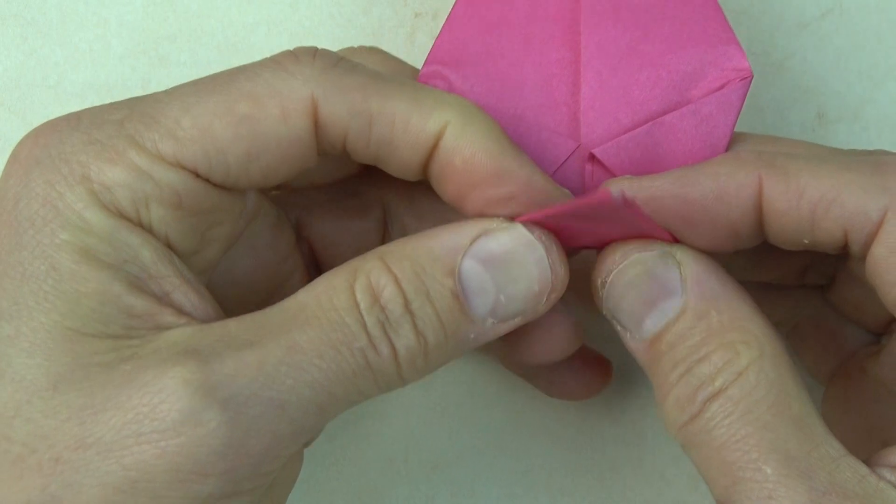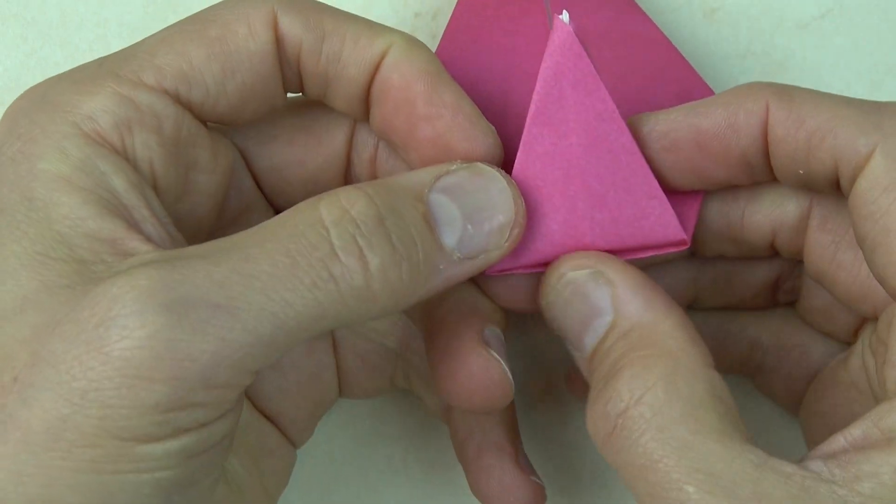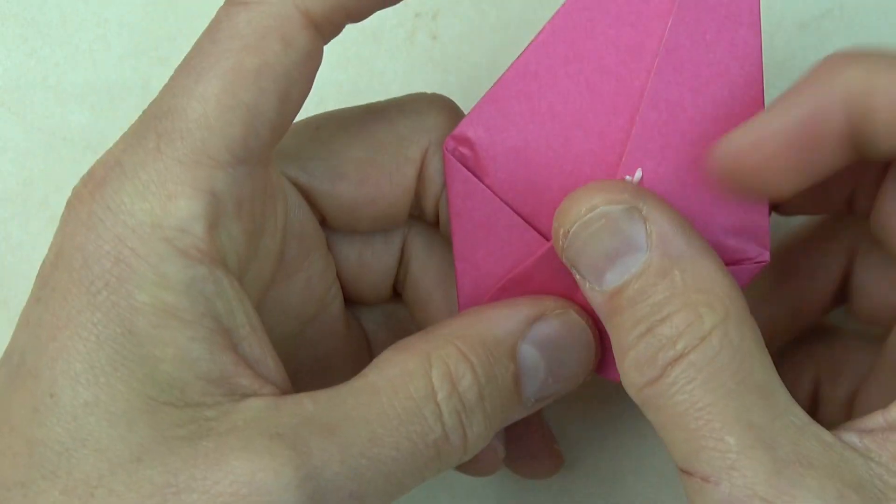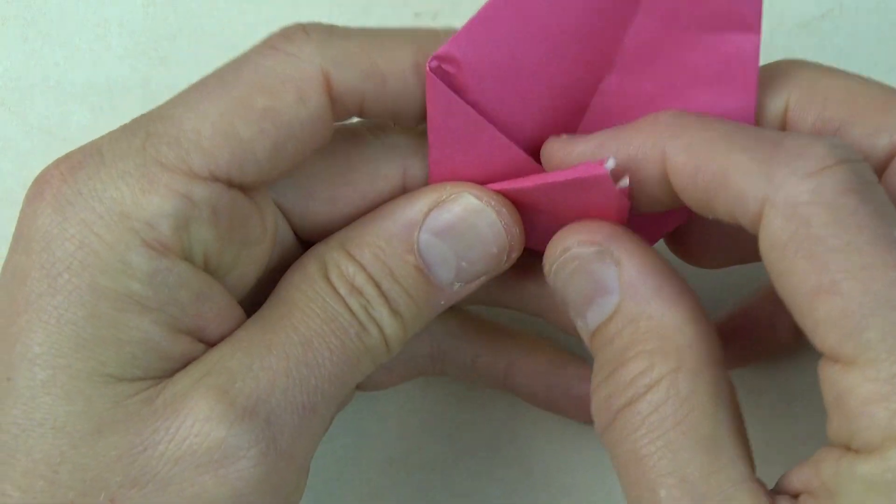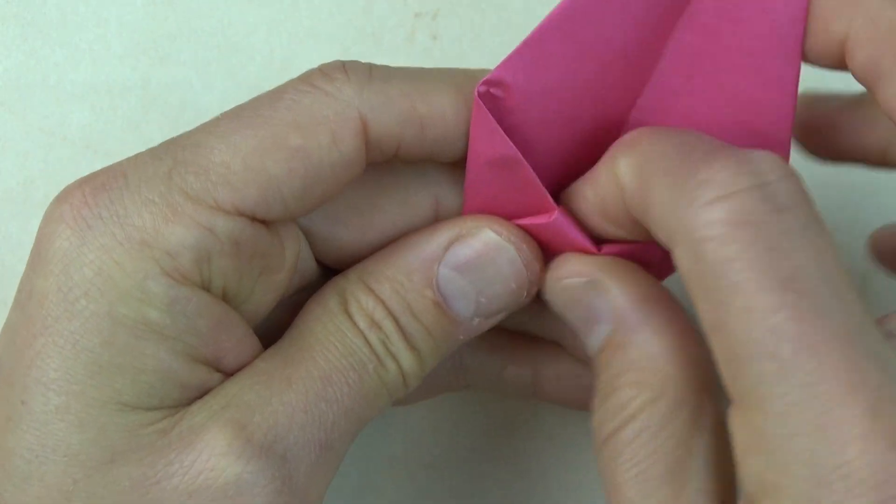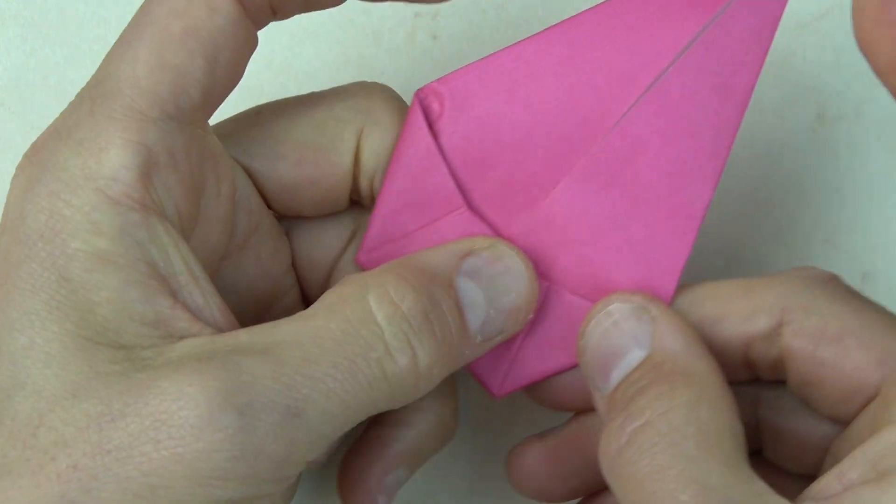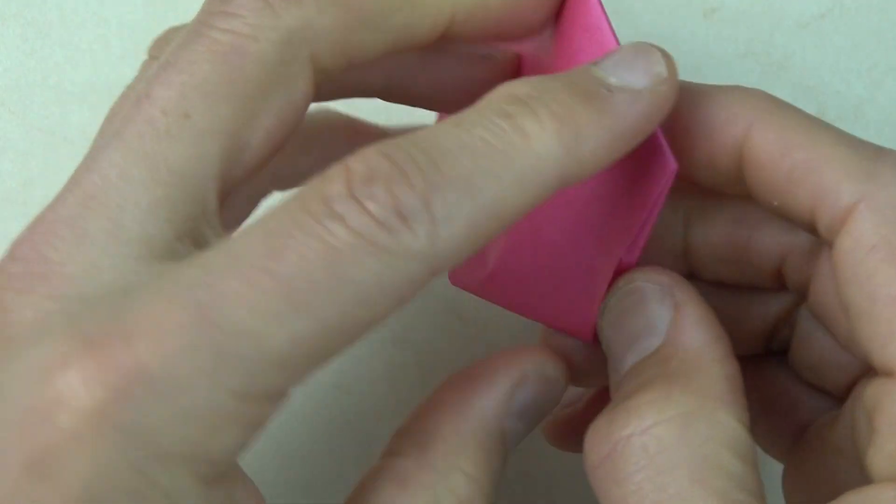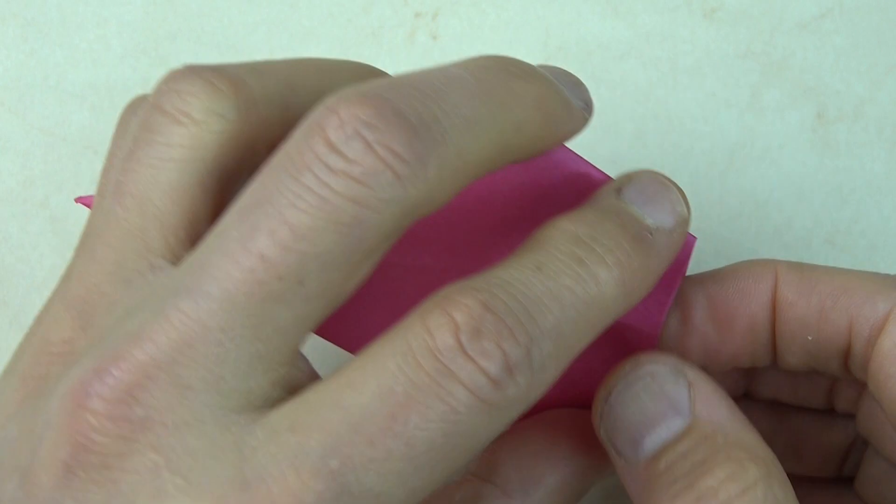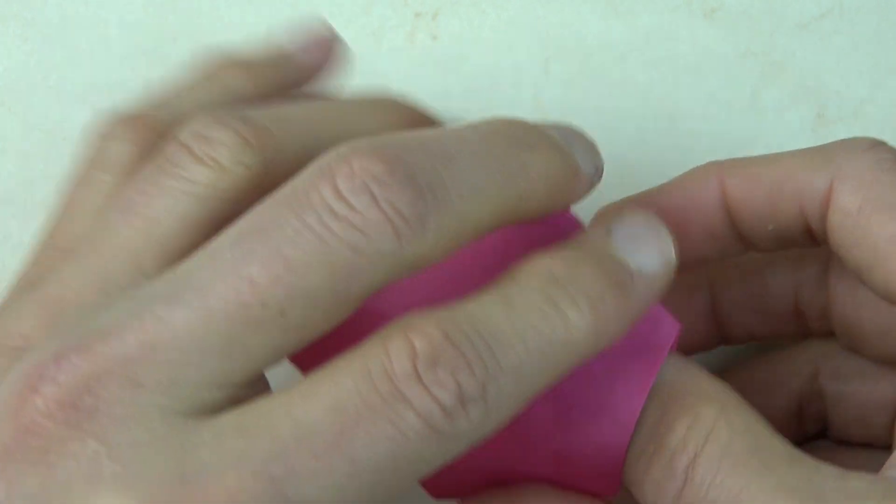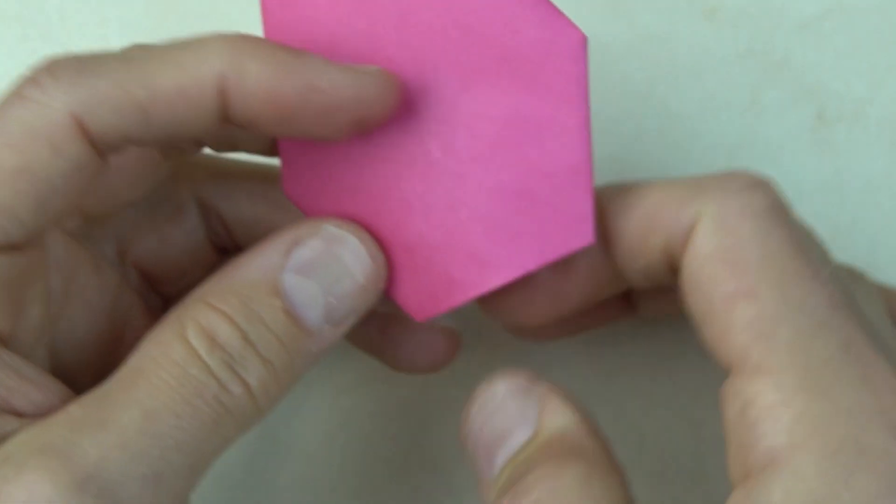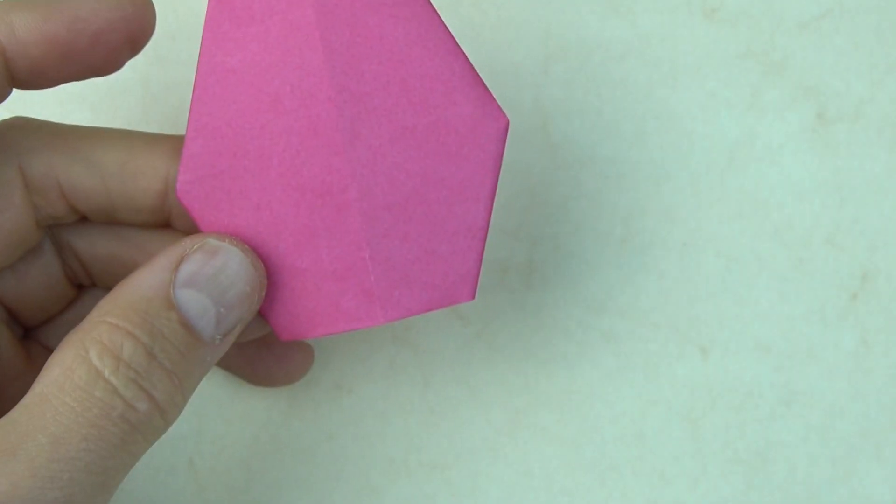And now fold this bottom point up on this edge. And tuck it into the pocket. And one wing is done. And so there's the wing. And you can fold another one.